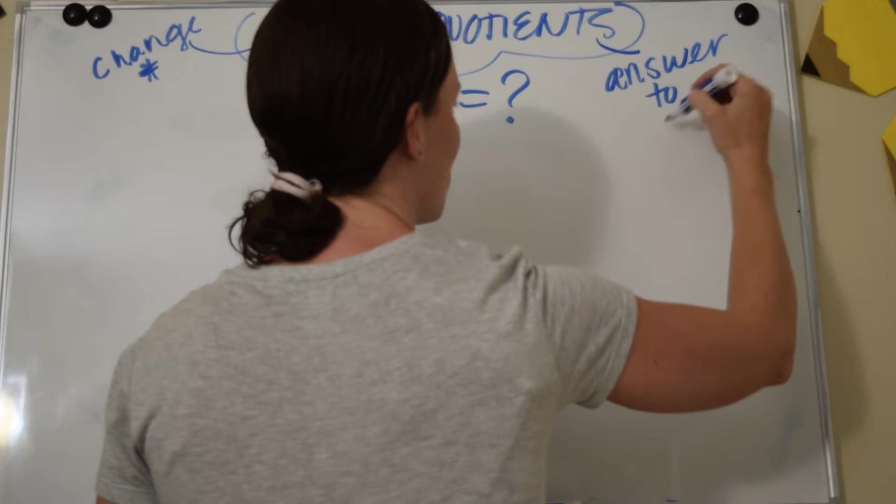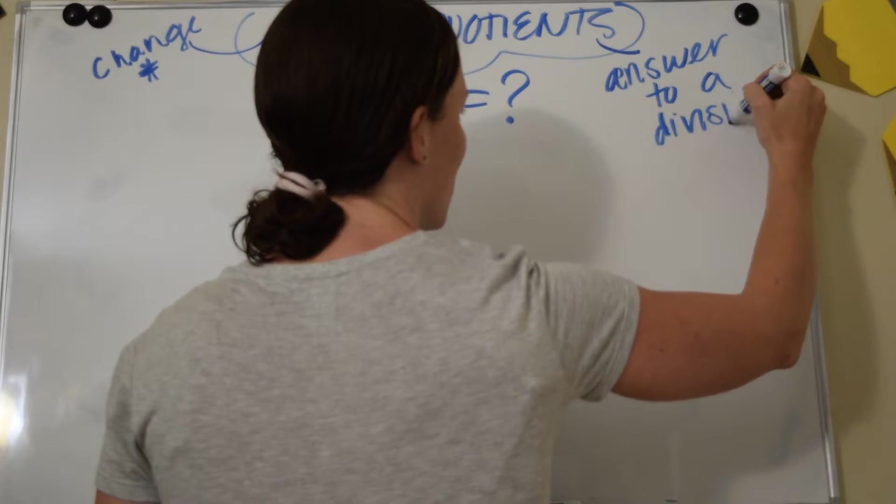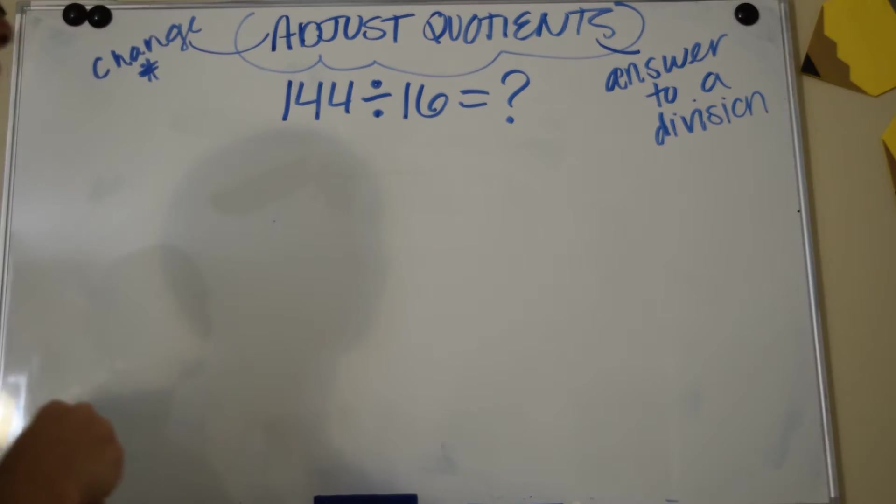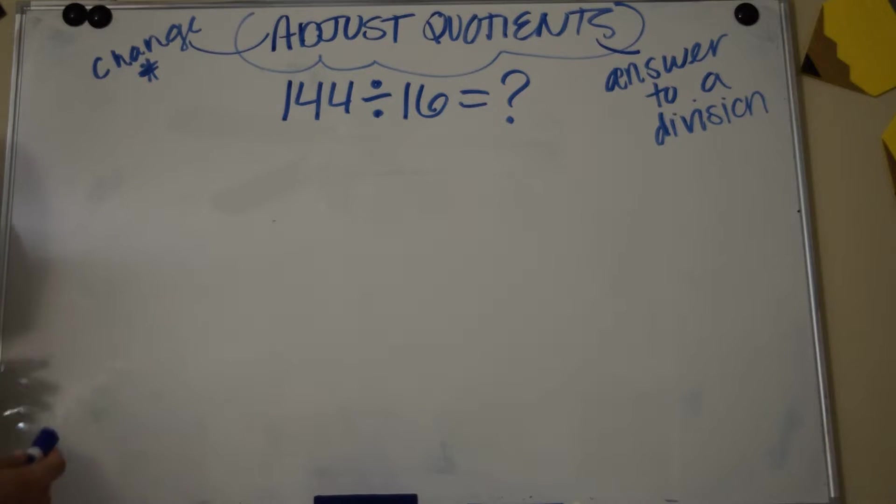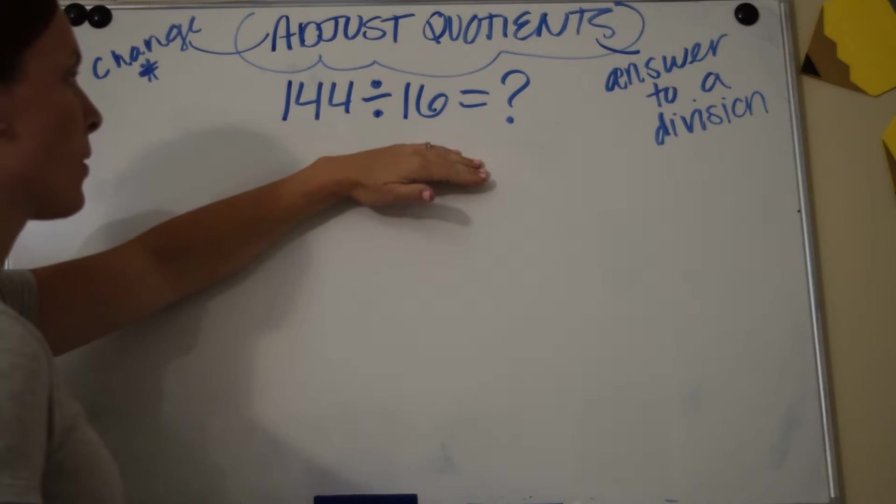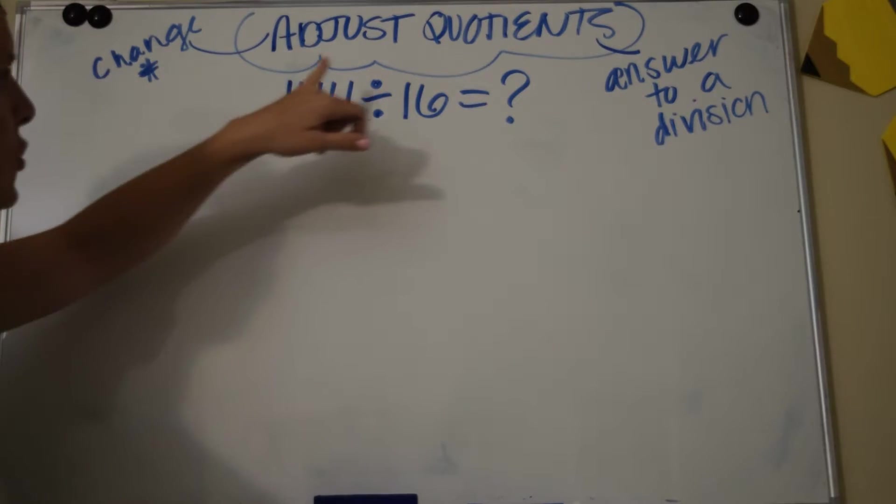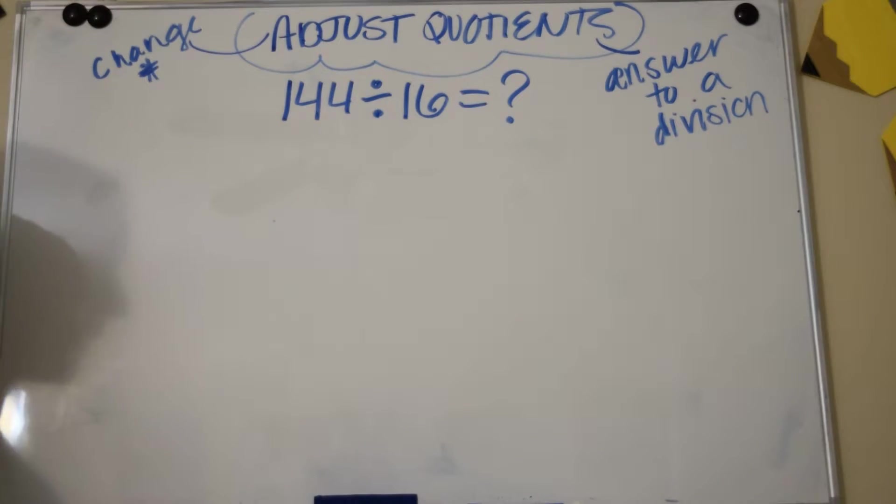So now that we know that, basically what they want us to do is solve the division problem, but they want us to change the answer to help us find the answer.